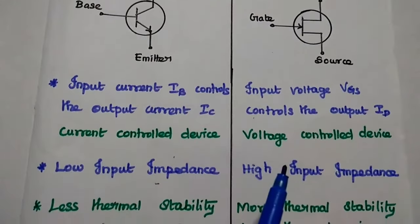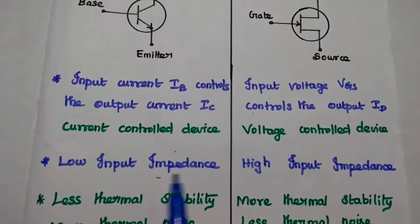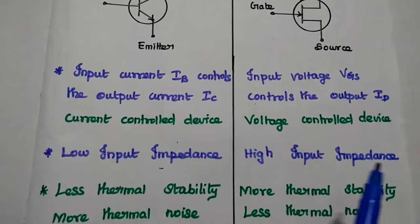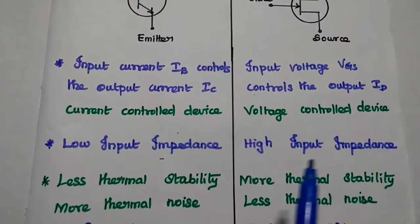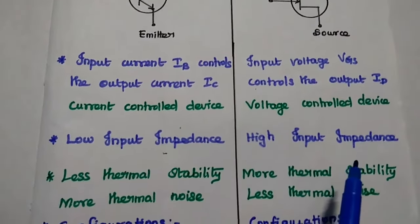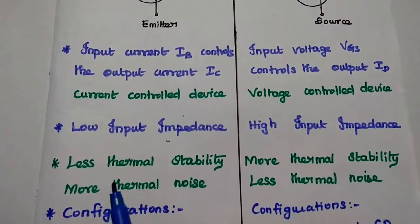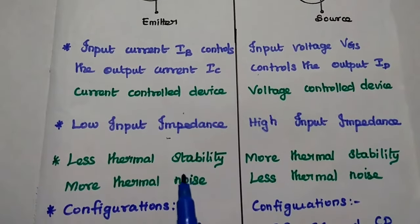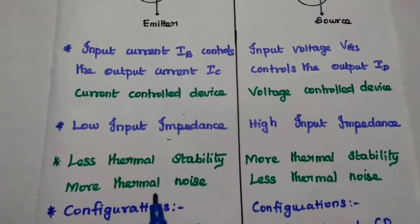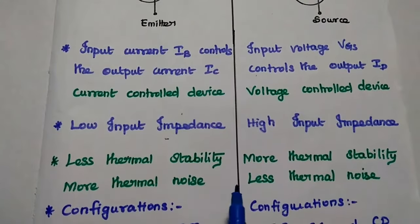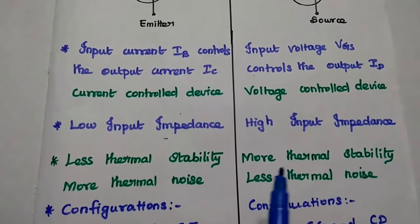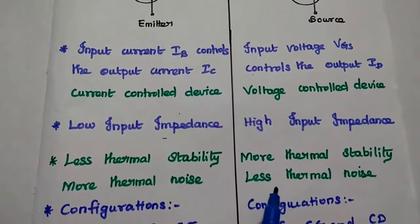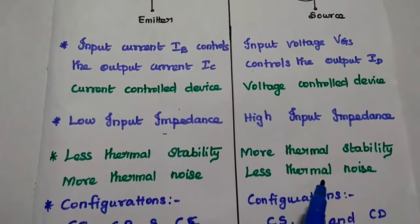In BJT, it has low input impedance and high output impedance. In FET, it has high input impedance. BJT has less thermal stability, hence it produces more thermal noise. FET has more thermal stability, hence less thermal noise is produced.